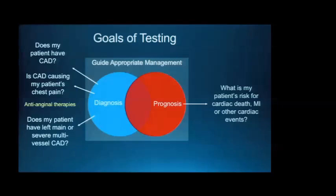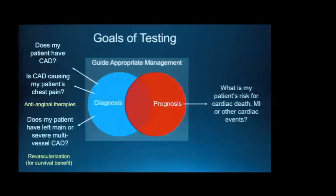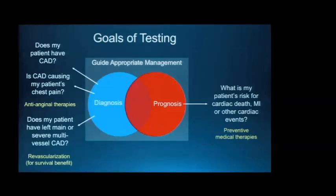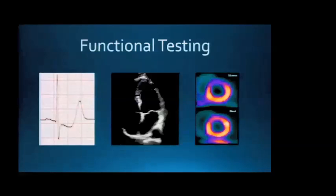These critical questions directly inform management. If a patient is having chest pain as a result of CAD, anti-anginal therapies will be effective. If multi-vessel disease is identified, revascularization may be chosen to improve survival. If a patient is at very high risk for bad outcomes, more intensive medical therapies will be used because they're more likely to benefit.